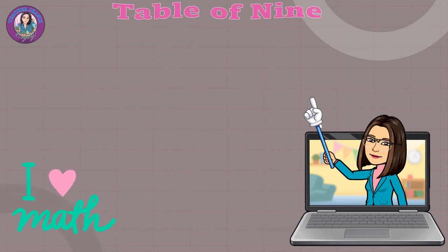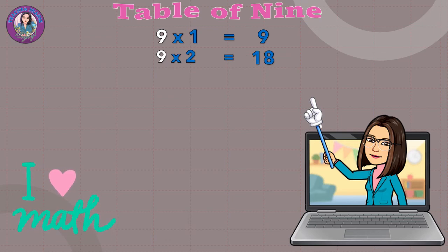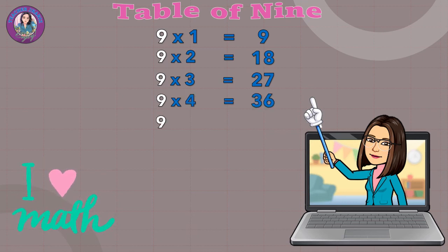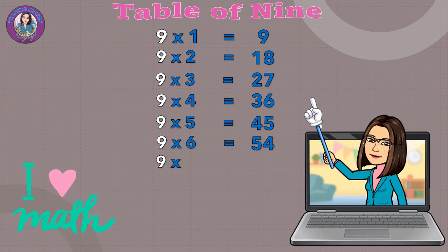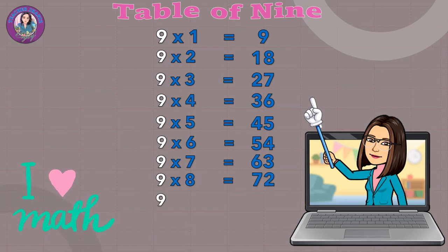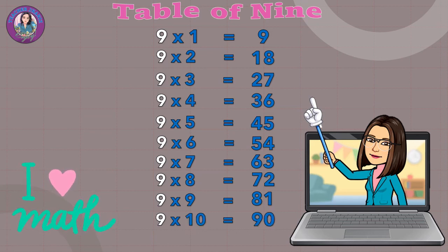Table of 9. 9 x 1 equals 9. 9 x 2 equals 18. 9 x 3 equals 27. 9 x 4 equals 36. 9 x 5 equals 45. 9 x 6 equals 54. 9 x 7 equals 63. 9 x 8 equals 72. 9 x 9 equals 81. 9 x 10 equals 90.